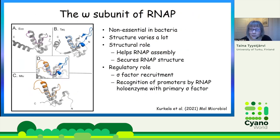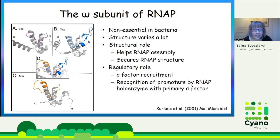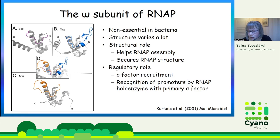What is this omega subunit? Just to remind those who are not so familiar with RNA polymerase — it's a small, tiny 7-kilodalton subunit in RNA polymerase. It's typically non-essential in bacterial RNA polymerases, but it is essential in eukaryotic RNA polymerases. If we compare the structure of RNA polymerase in different bacterial species like E. coli, Thermus aquaticus, and Mycobacterium tuberculosis, we see that the structure differs a lot between different bacteria. The biological role of this subunit is unclear.